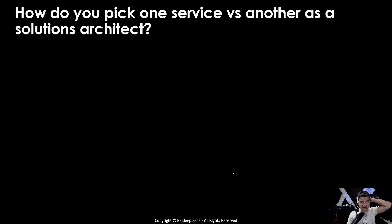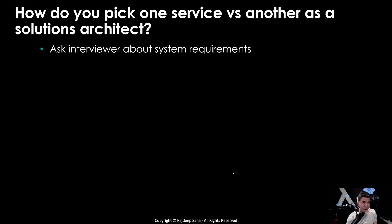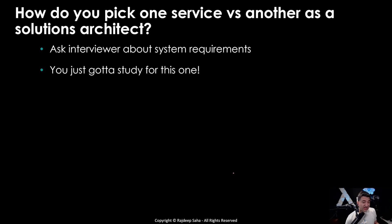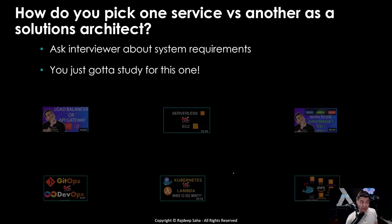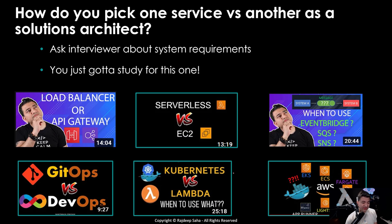Another question that comes up a lot in solutions architect interviews is: how do you pick one service versus another? There is no best or worst service. Ask the interviewer about the system requirements, and based on those requirements select service A versus service B. There is no short answer for this — you just have to study, because this is literally the bread and butter of solutions architects. The good news is there are playlists comparing all comparable services — links are in the description.